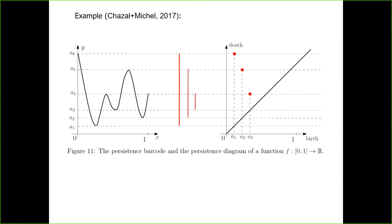Here we come from the lower level sets, but we can do the same thing from the upper level sets. The one difference is that instead of birth being smaller than death, if we come from above in the upper level sets, we have that the death is lower than the birth. So this is the persistent diagram. The points that are far from the diagonal are considered as topological signals, and the points that are close to the diagonal are considered as noise.